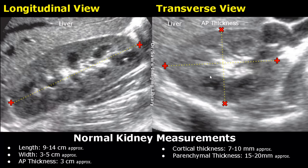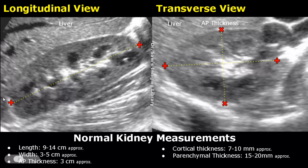These are longitudinal and transverse views of the right kidney. The length is measured in the longitudinal view. One caliper is placed at the upper pole of the kidney and the second caliper is placed at the lower pole. The length is between 9 to 14 centimeters approximately.